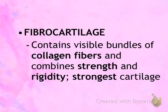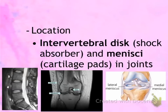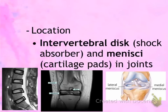The last cartilage is fibrocartilage. Because it contains tons and tons of collagen fibers, it is very strong — the strongest out of the three cartilages. It is rigid and gives a lot of support and shape to whatever structure it's located in. Locations of fibrocartilage include intervertebral discs, which are the cushions between the vertebrae, and menisci, which are the cartilage cushions in the knee that absorb shock when you are running or jumping.